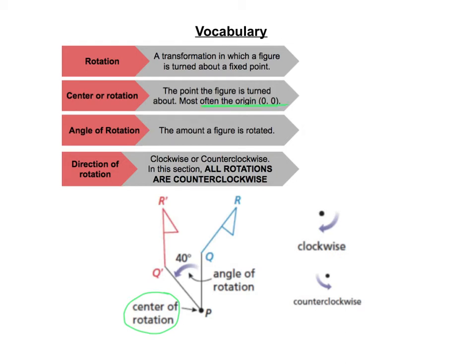The angle of rotation is the amount that the figure is rotated. Here, the angle of rotation is 40 degrees. In this class, we're going to stick with multiples of 90. We'll look at rules for 90-degree, 180-degree, and 270-degree rotations.